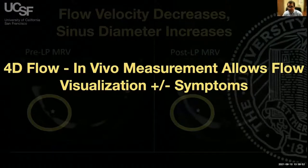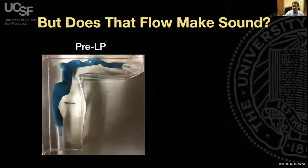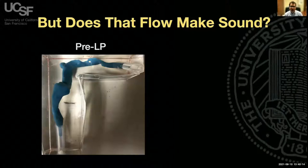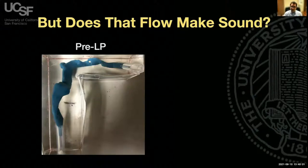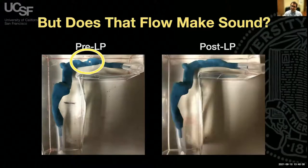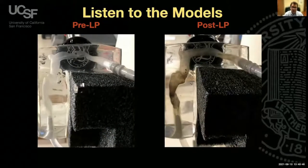What 4D flow doesn't tell us is whether the hemodynamics actually make sound. For that, we use 3D printed models of patients' blood vessels—a wax model of the transverse sinus, sigmoid sinus, and jugular vein. We print a model with stenosis and sigmoid sinus diverticulum in blue wax embedded in a plastic fixture. The wax melts at lower temperature, leaving a hollow model we hook up to a flow circuit with a Bluetooth-enabled stethoscope. We have a pre-lumbar puncture model with stenosis and a post-LP model without, and we listen.